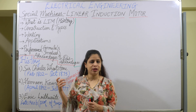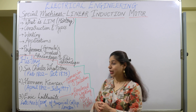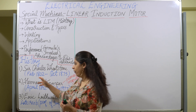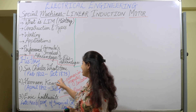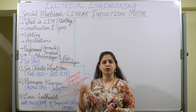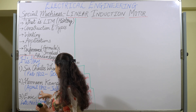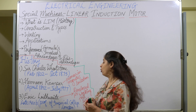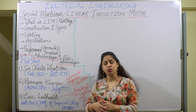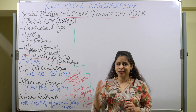Let us look at the history. There are three personalities who devoted their lives to the linear induction motor. The first is the great Sir Charles Wheatstone, who lived from February 1802 to October 1875, and was continuously working on the linear induction motor. Then came Hermann Kemper, who lived from April 1892 to July 1977, and is known as the pioneer in magnetic levitation. He was a German engineer very keen on the linear induction motor, and he developed a simple model, though it was not very clear at that time.